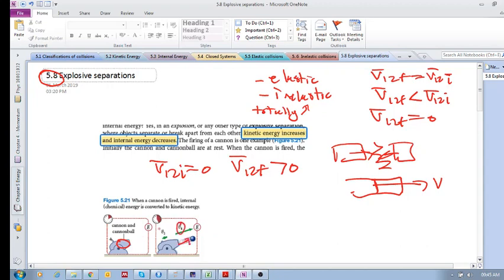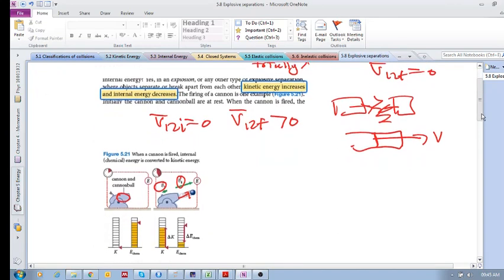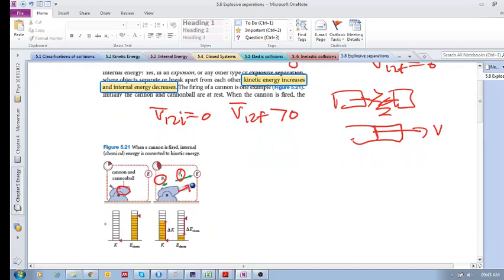Okay, so at the initial state or initial stage, we have a high internal energy, chemical energy, and that gets converted.